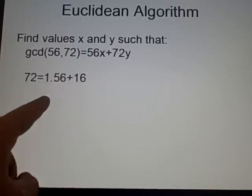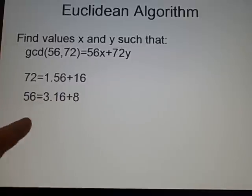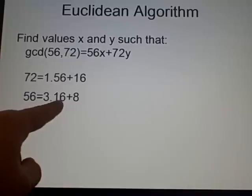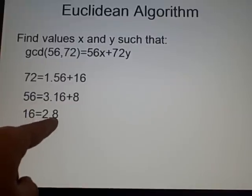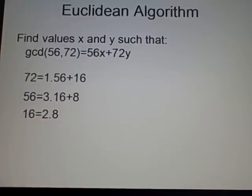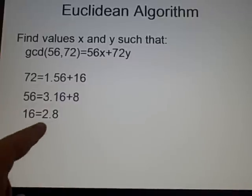So, 56 is 3 times 16, which is 48, plus 8. Next, we have 16 is 8 times 2. Now, here we know there is no remainder, so the greatest common divisor is 8.